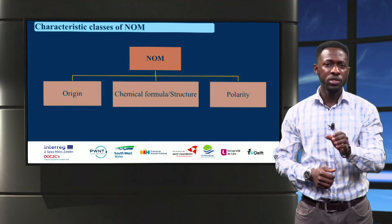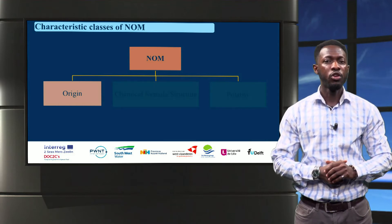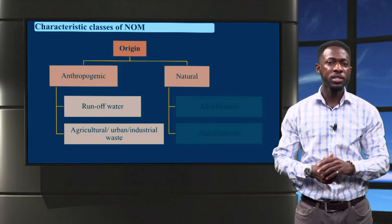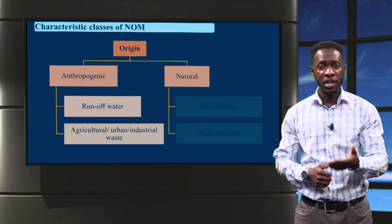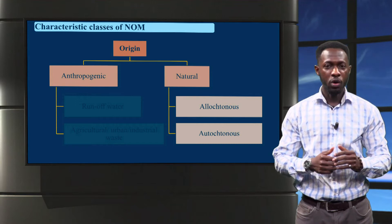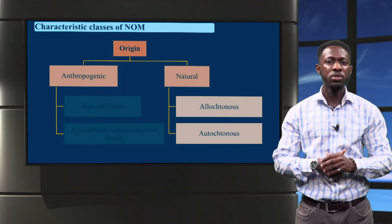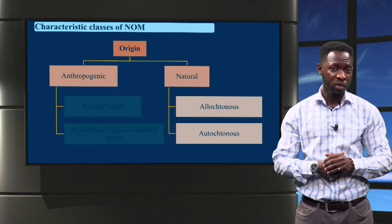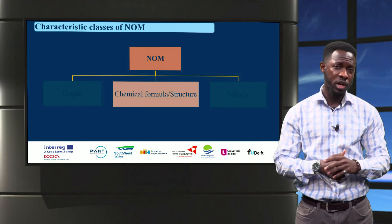Now let's take a closer look at each of these classes and further break them down, starting from the origin. NOM can originate from natural or anthropogenic sources. Examples of anthropogenic sources are runoff water and agricultural, urban or industrial waste. Natural sources are distinguished based on where NOM is formed. Allochthonous NOM comes from distant places and may have been carried to its present location by agents of erosion, whereas autochthonous NOM is produced in-situ.